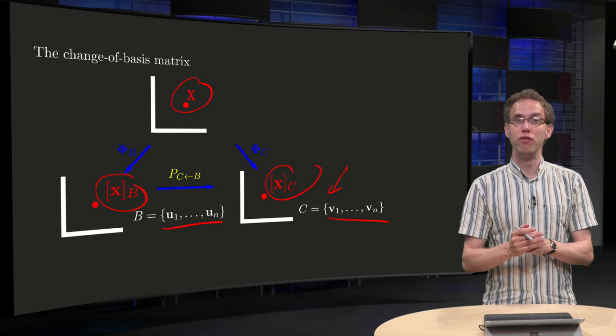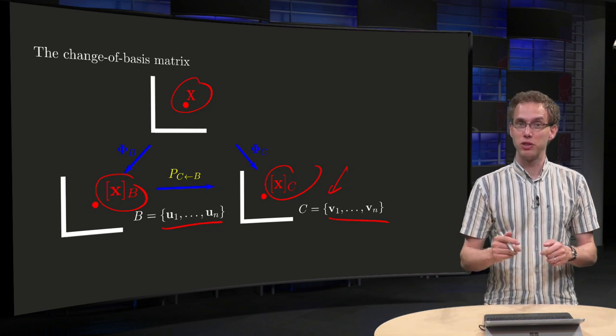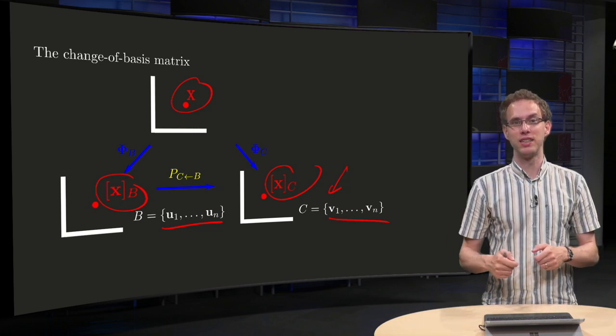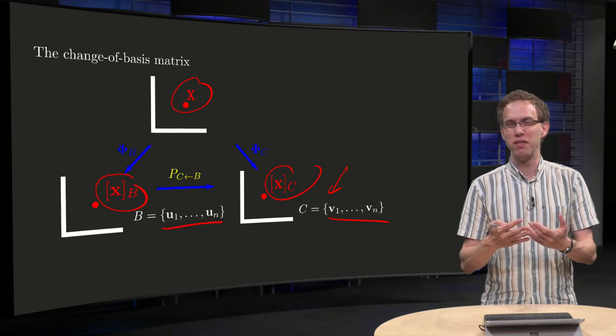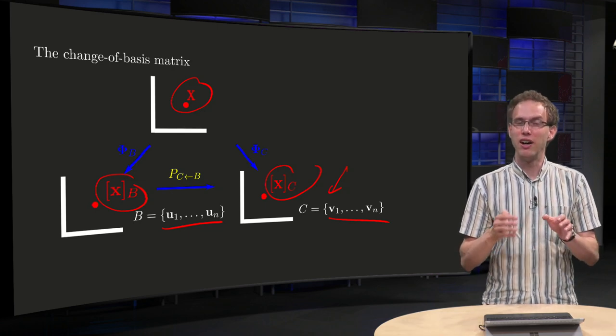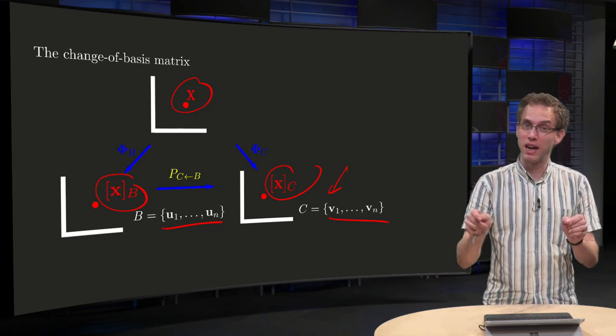Now question: how can we convert those coordinate vectors into each other without going back to x? Because x can be some nasty vector in some nasty vector space. We'd rather not do that; we'd rather convert them directly.